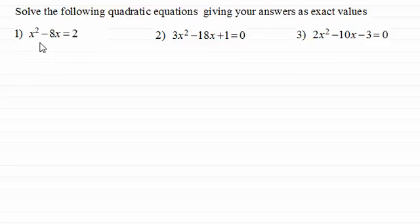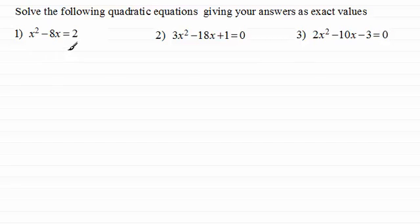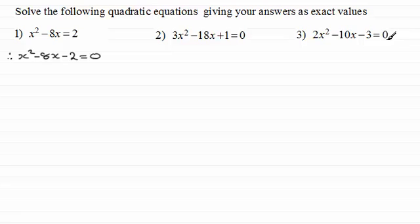With the first one, x squared minus 8x equals 2, I notice it's not in the correct format. Remember we always have quadratic equations in the form ax squared plus bx plus c equals zero. So if we subtract 2 from both sides we end up with x squared minus 8x minus 2 equals zero. The other two examples are already in that form.